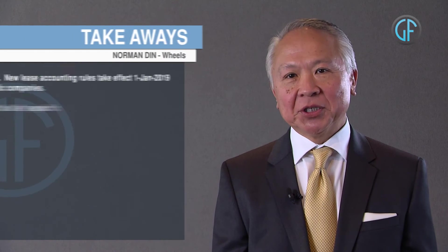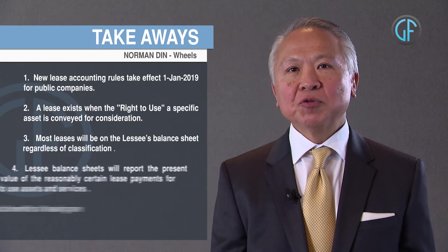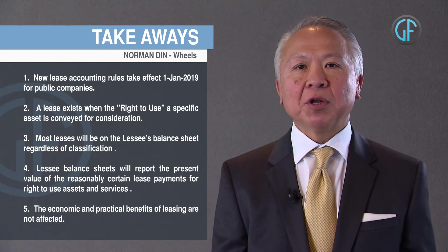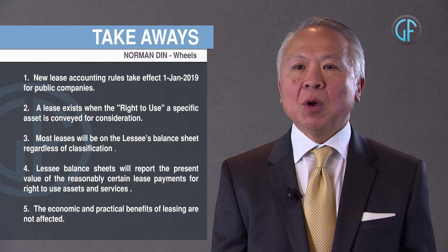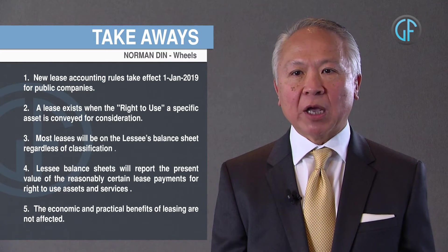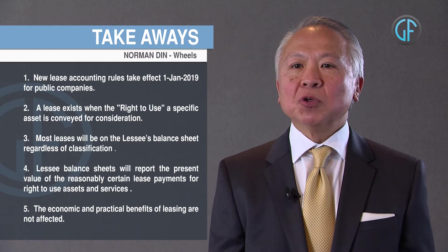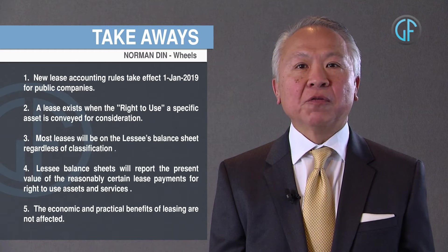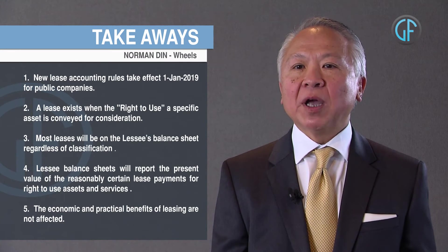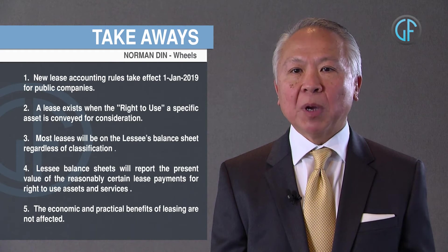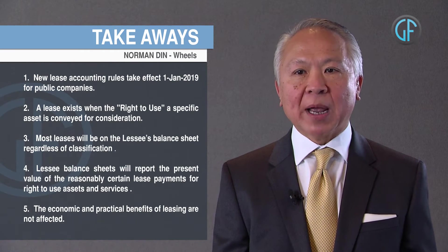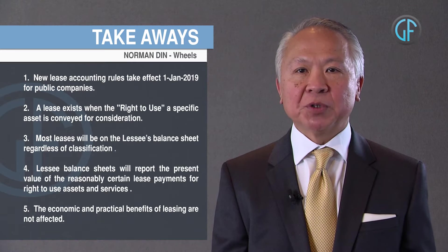Early in 2016, the boards responsible for accepted international and U.S. accounting standards published new rules governing how public companies will account for leases. These rules will take effect the 1st of January 2019 and provide increased visibility by moving leases out of the footnotes and onto the balance sheets and income statements.